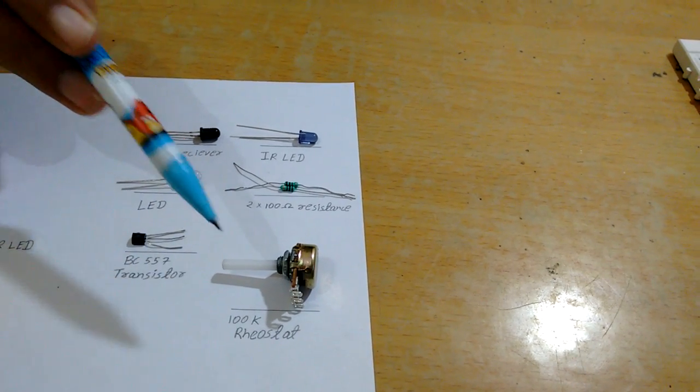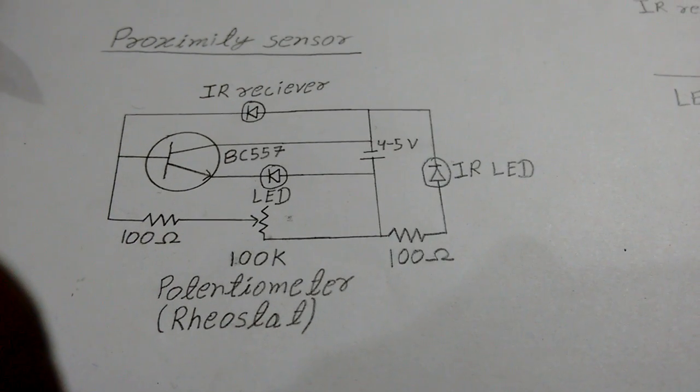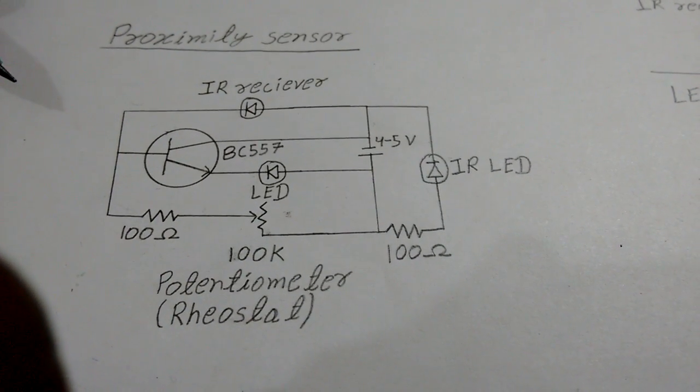A 100 kHz thread and of course a 4 to 5 volt battery. Here is the schematic for a long range proximity sensor.